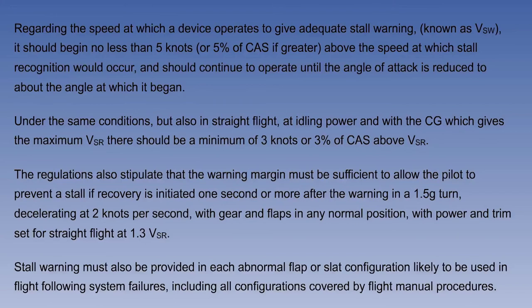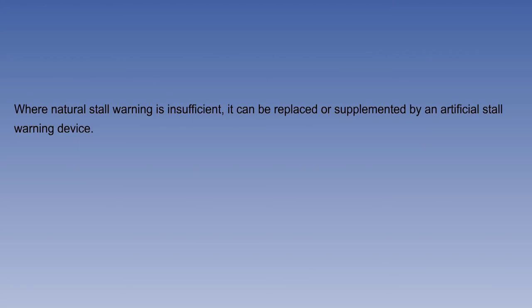Stall warning must also be provided in each abnormal flap or slat configuration likely to be used in flight following system failures, including all configurations covered by flight manual procedures. It is possible that adequate stall warning will be provided by the airflow separating fairly early and causing buffet over the wing and tail plane, but this is often insufficient, and so a device which simulates or substitutes for aerodynamic buffet is usually fitted.